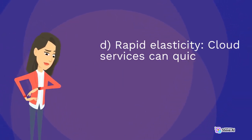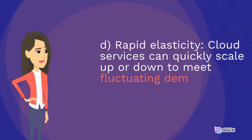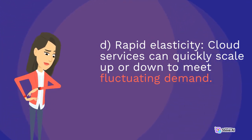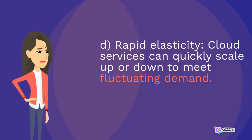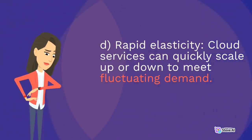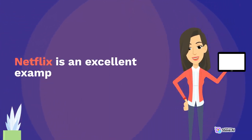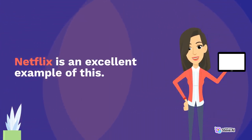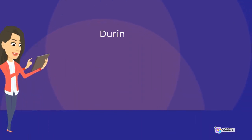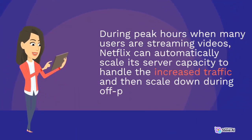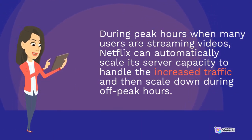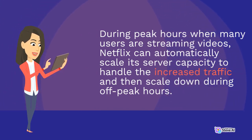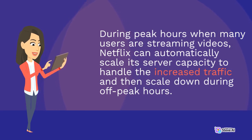D: Rapid elasticity. Cloud services can quickly scale up or down to meet fluctuating demand. Netflix is an excellent example of this. During peak hours, when many users are streaming videos, Netflix can automatically scale its server capacity to handle the increased traffic and then scale down during off-peak hours.